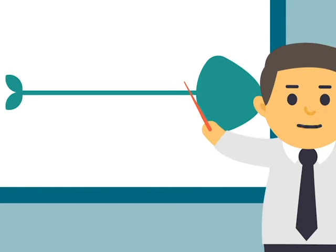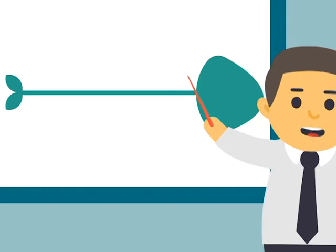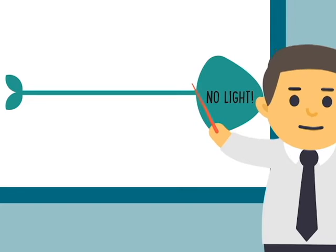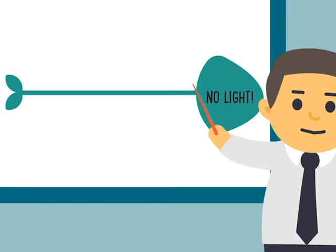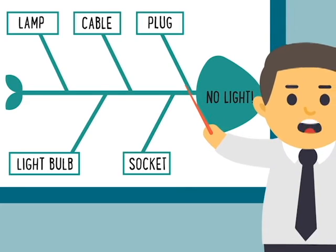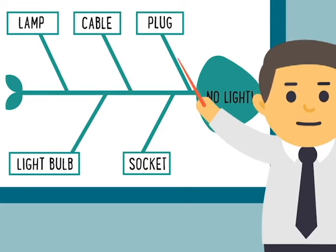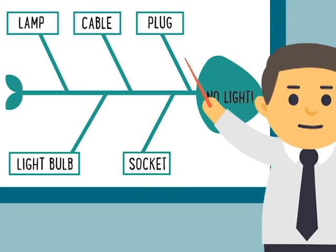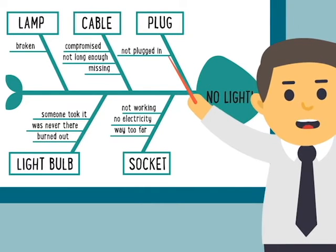In the head of the fish we write the problem, which in this case is 'there is no light.' Then we add the bones — first just the main factors, and then to each factor we add all the known causes.